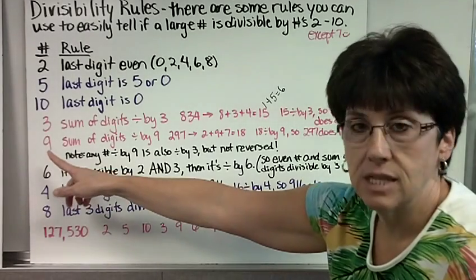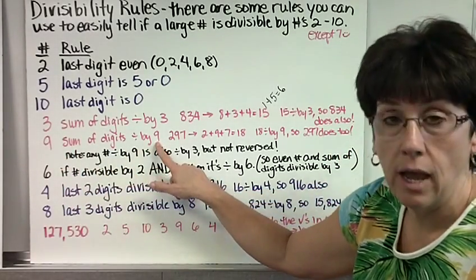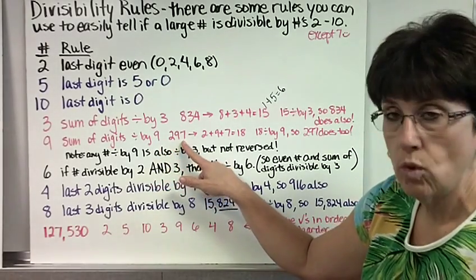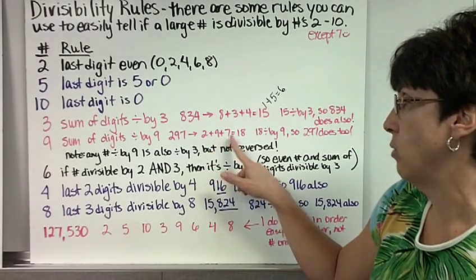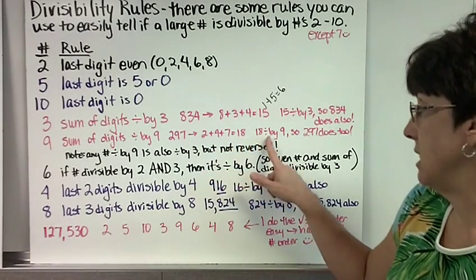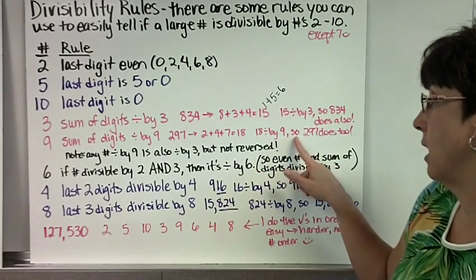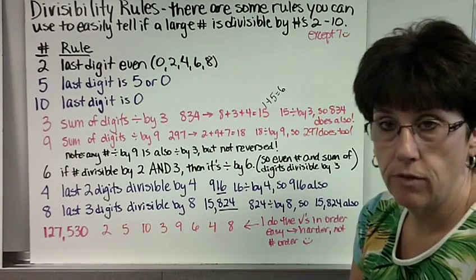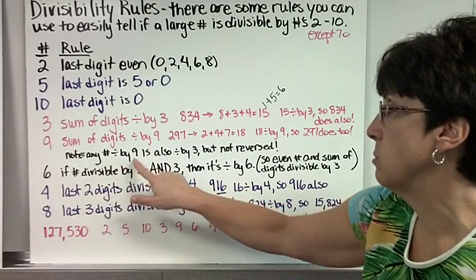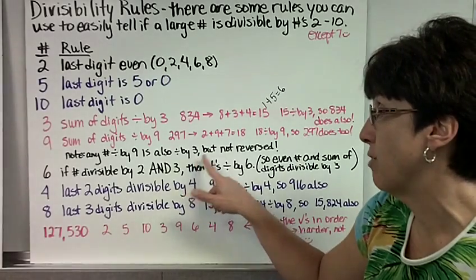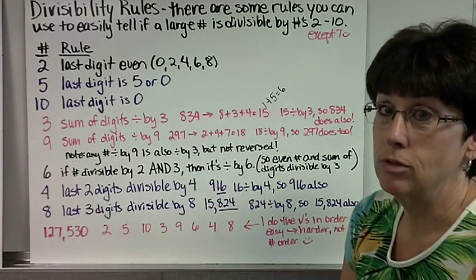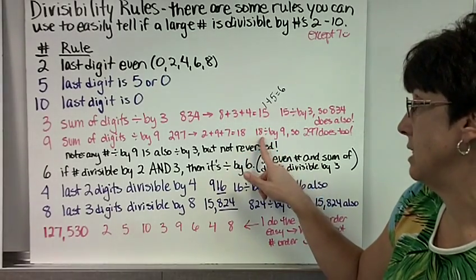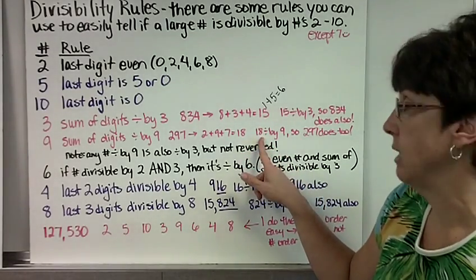So let's say I have the number 297. We add 2 plus 9 plus 7, and we get 18. And 18 is divisible by 9, or 18 divides by 9, so 297 does too. That's a pretty fun rule. Note, any number divisible by 9 is also divisible by 3, but not the other way around. For example, 15. 3 goes into 15 and 3 goes into 18, but 9 only goes into 18.